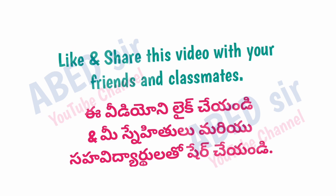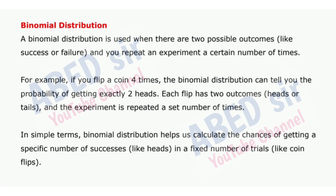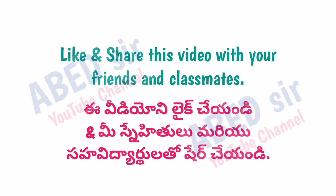Next important short question: Binomial distribution. A binomial distribution is used when there are two possible outcomes — like success or failure — and you repeat an experiment a certain number of times. For example, if you flip a coin four times, the binomial distribution can tell you the probability of getting exactly two heads. Each flip has two outcomes — heads or tails — and the experiment is repeated a set number of times. In simple terms, binomial distribution helps us calculate the chances of getting a specific number of successes, like heads, in a fixed number of trials like coin flips.